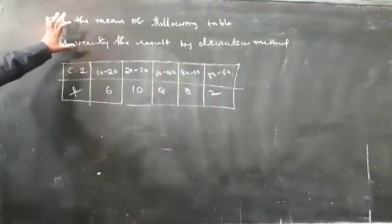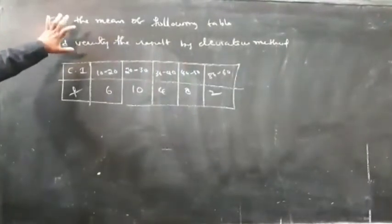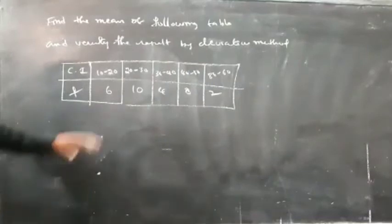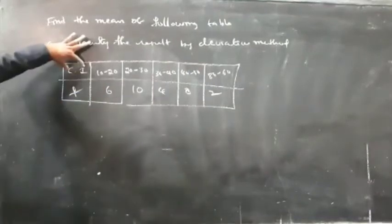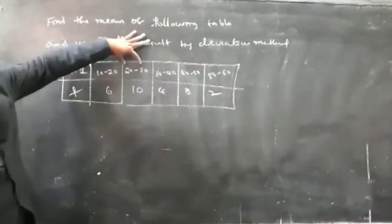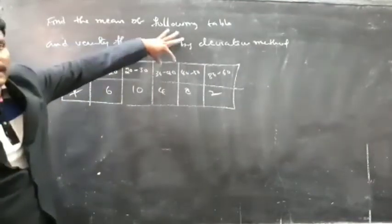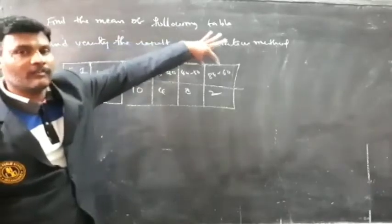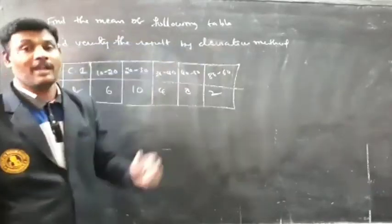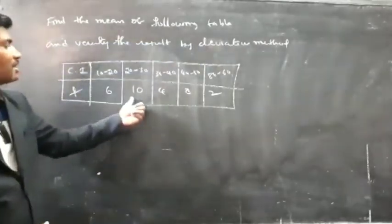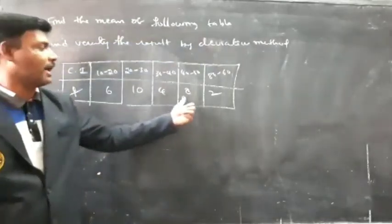Find the mean of the following table and also verify the result by using the deviation method. The class intervals are 10 to 20, 20 to 30, 30 to 40, 40 to 50, and 50 to 60, with frequencies 6, 10, 4, 8, and 2 respectively.